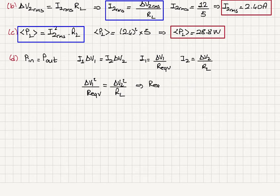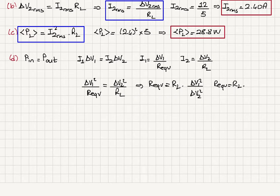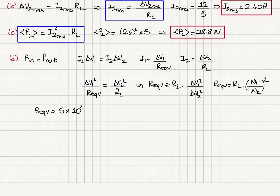So the equivalent resistance can be written as R_load times (delta V1 over delta V2) squared, which equals R_load times (N1/N2) squared — since we showed in Part A that delta V1 over delta V2 equals N1 over N2. Therefore R_equivalent equals 5 ohms times 10 squared, which gives an equivalent resistance of 500 ohms.